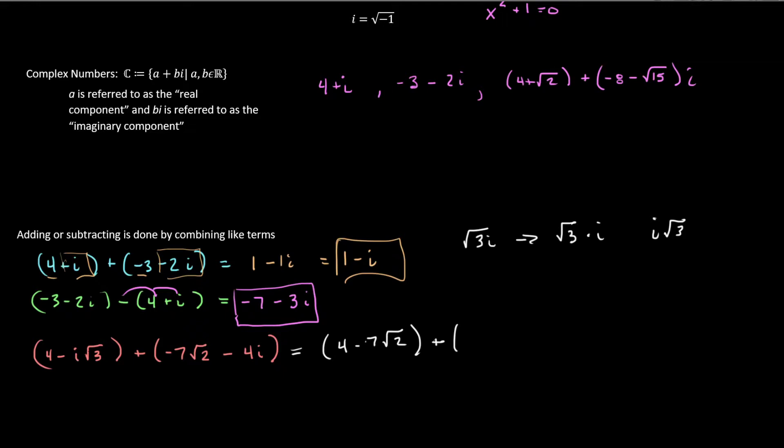And now I'm going to take the numbers, not the i, but the numbers. I have negative root of 3 and then a negative 4. So I'm going to say minus 4 minus the square root of 3 in parentheses and then an i. And that is actually the answer.